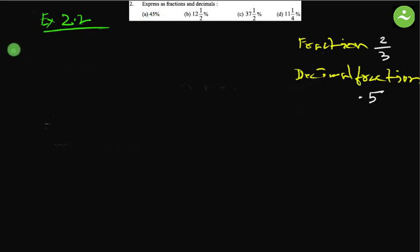Let us start with (a) 45 percent. 45 percent means 45 multiplied by 1 by 100. Percent means 1 by 100, equals to. Now simplify, divide both by 5. This will be 9 and this will be 20. 9 by 20.